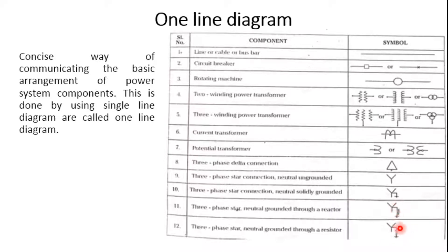These star connection grounding types are important when the system is subjected to fault conditions. Earlier, reactors connected to ground were commonly used, but in the case of generators, resistor grounding is now preferred. Each method has its own advantages and disadvantages.